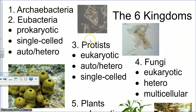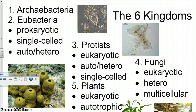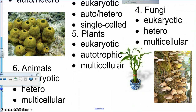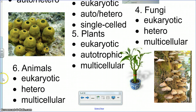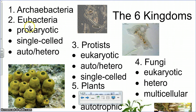If you're a moneran, you're made of one cell. If you're a eukaryote, you can be made of more than one cell, or even just one cell. Groups three, four, five, and six are all eukaryotes. Protists are eukaryotic — meaning they have a nucleus — they can be auto- or heterotrophic, meaning they can either make their own food or obtain it some other way, and they're single-celled.